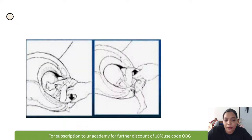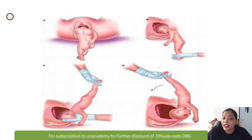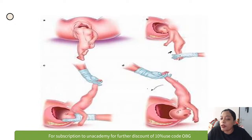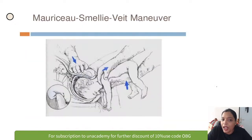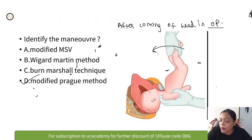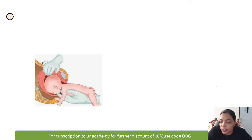This is Burn Marshall's maneuver — you hold the feet at the ankle and pull up vertically as an arc. Burn Marshall is used when the aftercoming head of breech is in the OA position. The alternative to Burn Marshall is the modified Prague method.